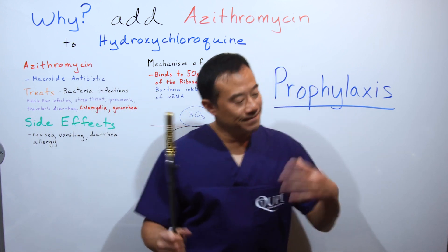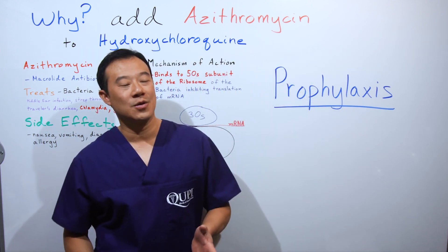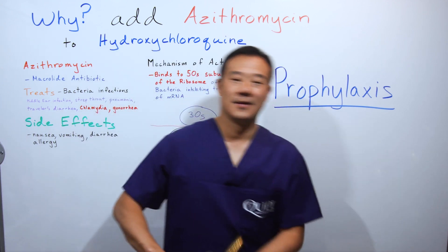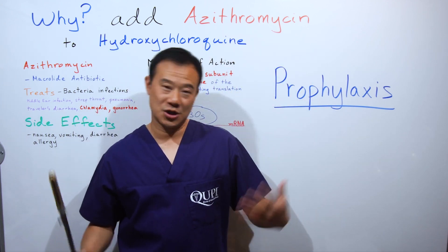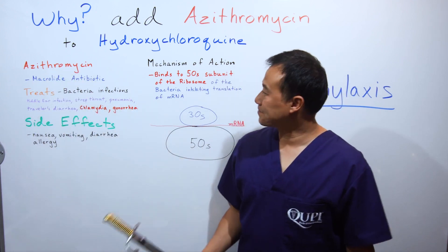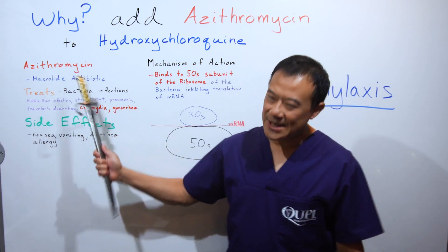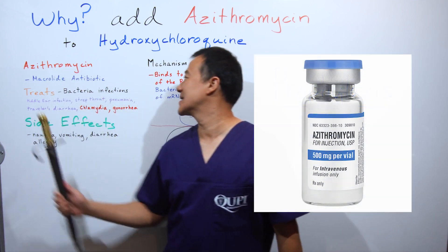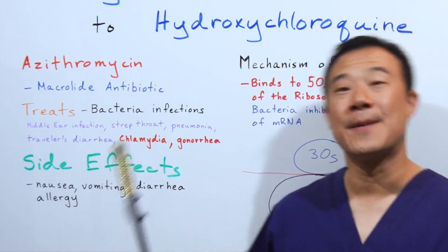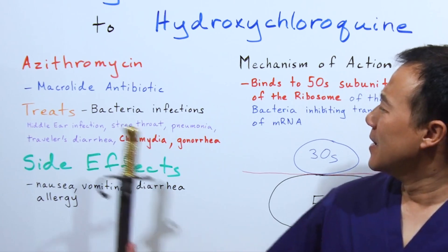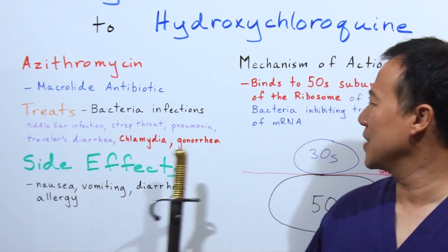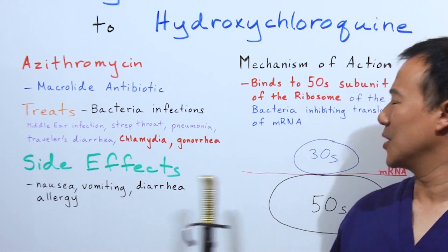Let's talk about azithromycin. Azithromycin is a macrolide antibiotic. It treats bacterial infections: middle ear infections, strep throat, pneumonia, traveler's diarrhea, chlamydia, and gonorrhea — the last two being sexually transmitted diseases.